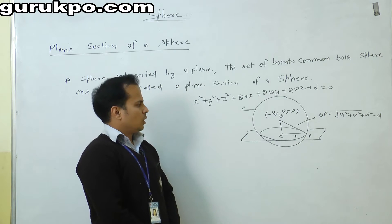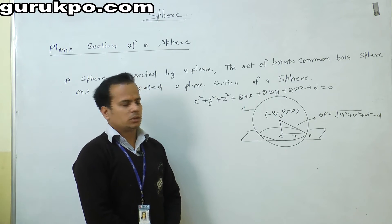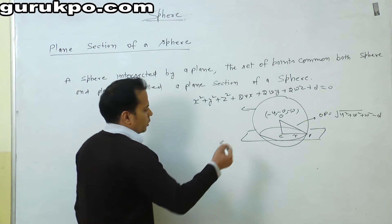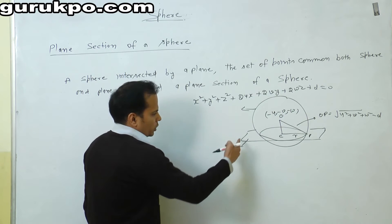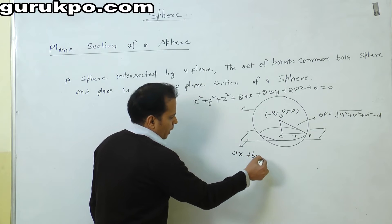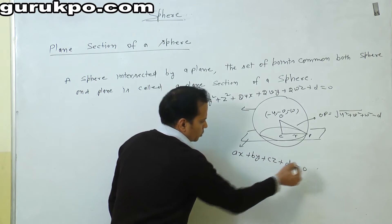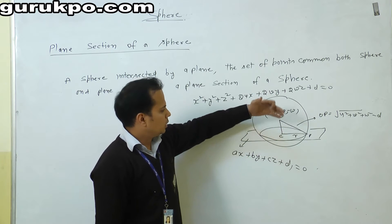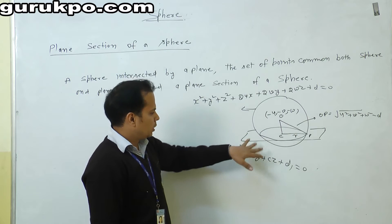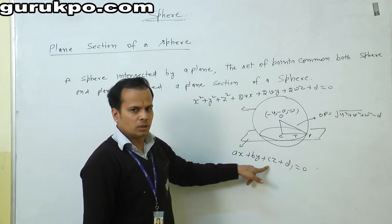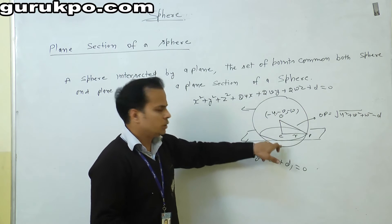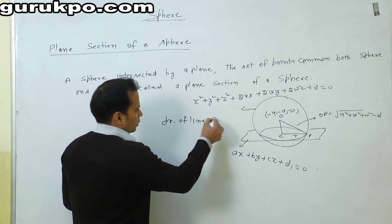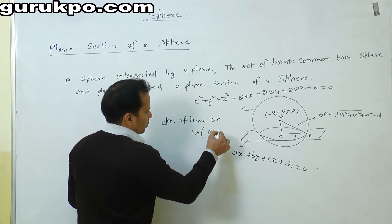Now we find the center and radius of the circle made on the plane. Let the equation of the plane be Ax + By + Cz + D₁ = 0. We know that the direction ratios of the normal to a plane are equal to the direction ratios of the perpendicular line from the center. So the direction ratios of line OC equal A, B, C.